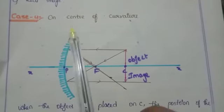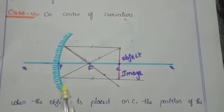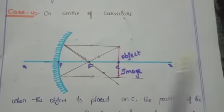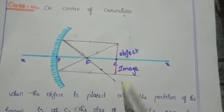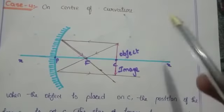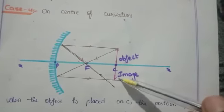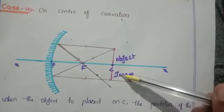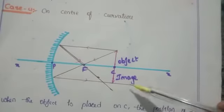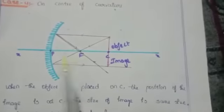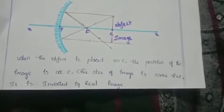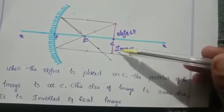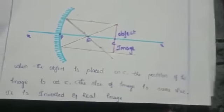See here, 4th case: when the object is on the center of curvature. See here, it is the ray diagram of concave mirror case 4. The object is placed at center of curvature. The ray will be parallel to the principal axis and pass through the focus, and another ray passes through the focus and parallel to the principal axis. The image will also be at the center of curvature. Both object and image are at center of curvature only, and both sizes are also the same. The size of image is the same size. It is an inverted and real image. When images are formed downside, those are called inverted images and real images.